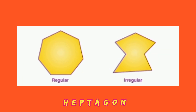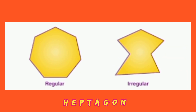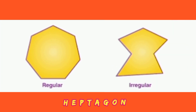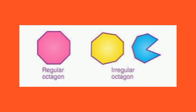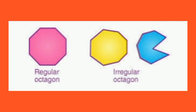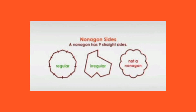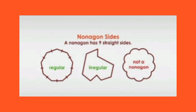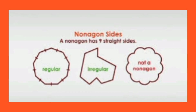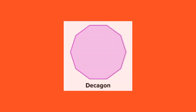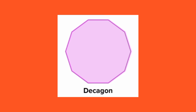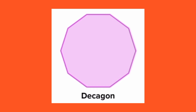Heptagon — these are shapes with 7 sides. Octagon — these are shapes with 8 sides. Nonagon — these are shapes with 9 sides. Decagon — these are shapes with 10 sides.